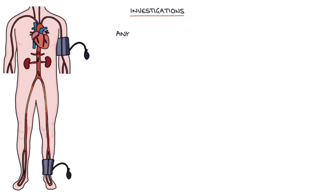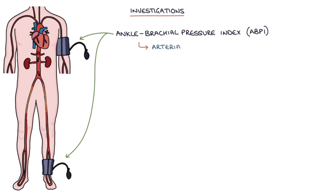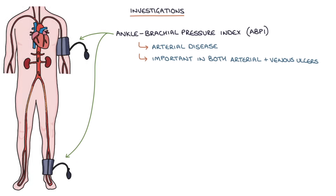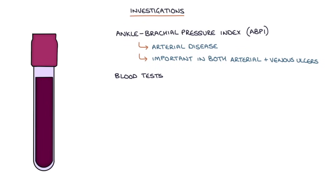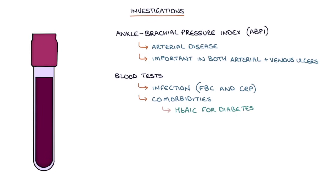Regarding investigations, an ankle brachial pressure index, or ABPI, can be used to assess for arterial disease. This is an important investigation in both arterial and venous ulcer assessment. Blood tests may help assess for infection — for example, a full blood count and CRP — and also for comorbidities, such as an HbA1c for diabetes, a full blood count for anemia, and an albumin level for malnutrition.